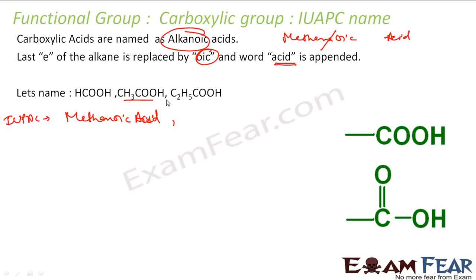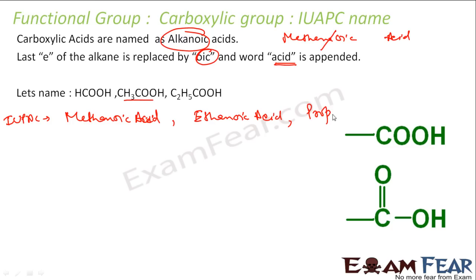For CH3CH2COOH with three carbon atoms, it is prop — propanoic acid. So methanoic acid, ethanoic acid, propanoic acid — that is how you name them using IUPAC.